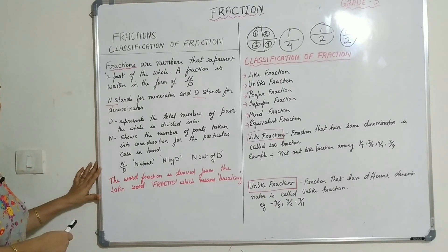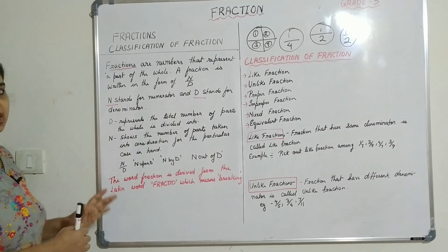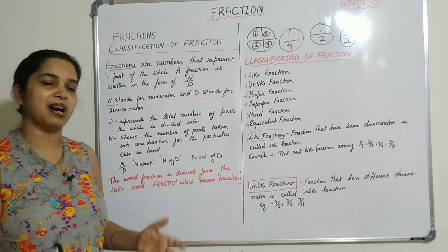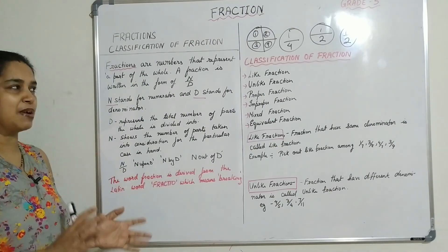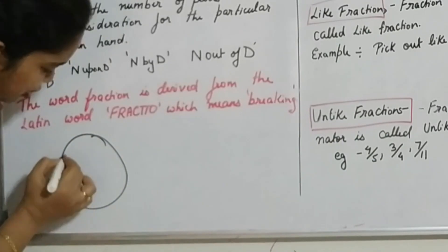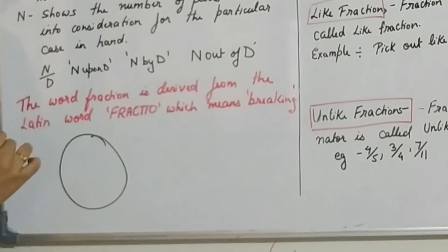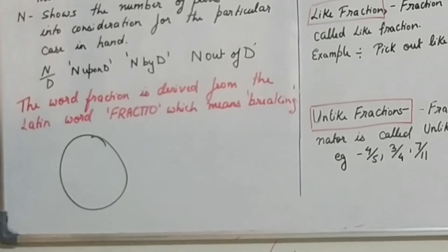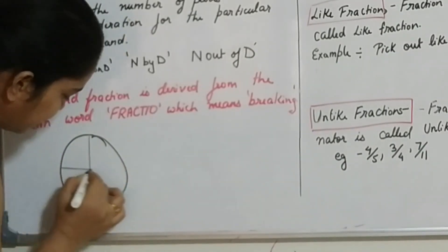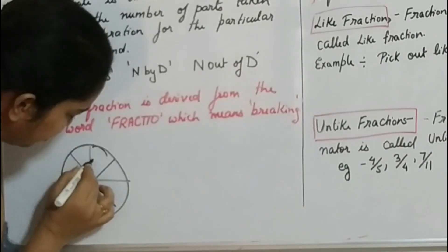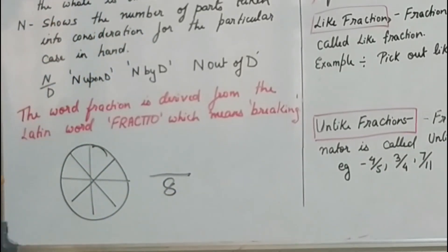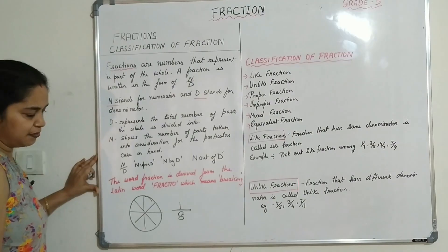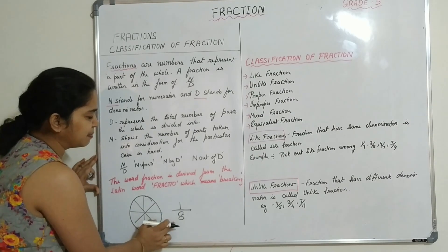The word fraction is derived from the Latin word 'fractio,' which means breaking. When something is broken and equally divided, we distribute those parts among each member — that is the fraction of the whole. For example, if a pizza has to be distributed among eight members of a family, you divide the pizza into eight equal parts: one, two, three, four, five, six, seven, eight. The total number of parts is eight.